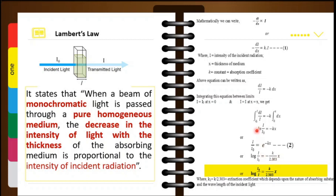Converting ln to log requires multiplying by 2.303, so 2.303 appears in the denominator. The final equation is log(I₀/I) = k₁·x, where k₁ = k/2.303 is referred to as the extinction coefficient. This extinction coefficient depends upon the nature of the substance and the wavelength of the incident light — for example, a blue colored glass and a green colored glass will have different absorption coefficients. Lambert's law is applicable to solids.